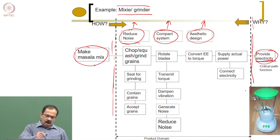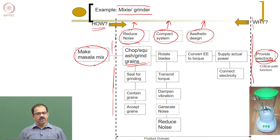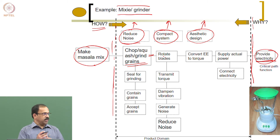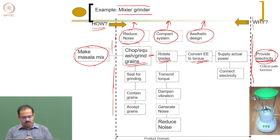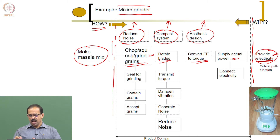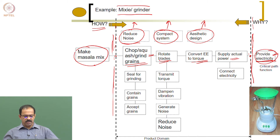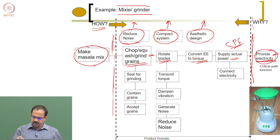We start asking questions. How do we get masala mix? By chopping, squashing, or grinding grains. How do we chop? Rotate the blades of the grinder. How do we rotate? Convert electricity to torque. How do you convert? Supply power. How do you supply power? Provide electricity. We have reached the other boundary, so we stop. These are the critical path functions or primary functions.